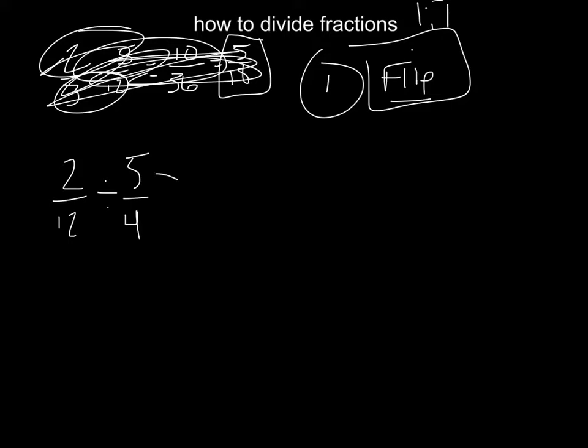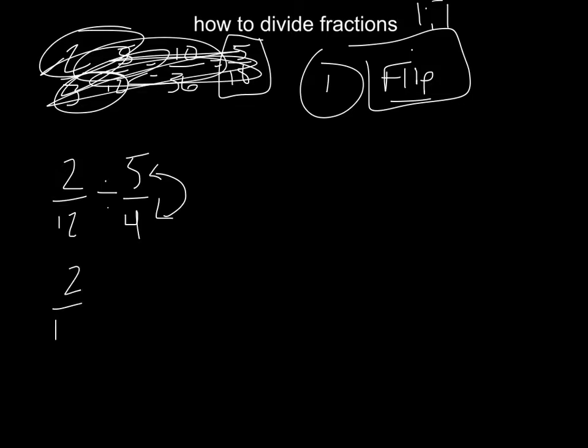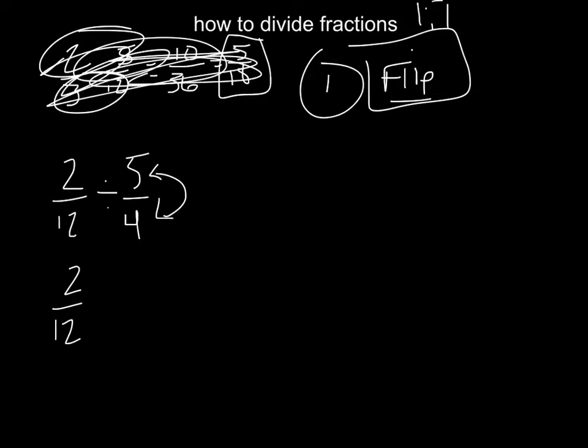So to divide fractions, all you do is flip one of the fractions. Flip the numerator and denominator. I'm going to turn the four to the top, put the five on the bottom. And then I can take this sign and turn it into a multiplication.